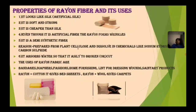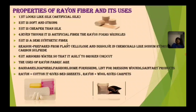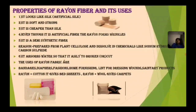The reason rayon forms wrinkles is that it is prepared from plant cellulose. It is not entirely prepared from chemicals — we mix fewer chemicals compared to nylon, where more chemicals are mixed. It is dissolved in chemicals like sodium hydroxide and carbon disulfide. It absorbs water so it is easily broken or cut.